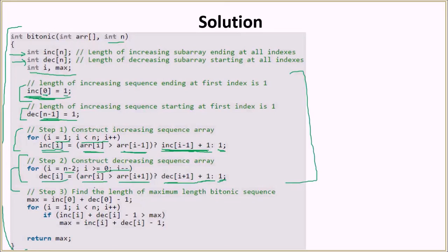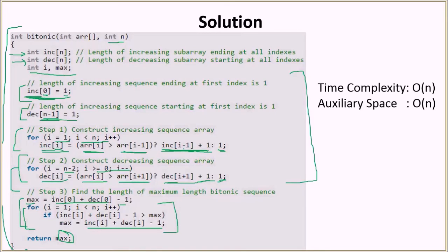After building both arrays, we calculate the maximum value. We initialize max with INC[0] + DEC[0] - 1, then run a loop computing INC[i] + DEC[i] - 1 for each index and keeping the maximum. Finally we return that maximum value. The time complexity is O(n) because we have three linear traversals of the array. The auxiliary space is also O(n) due to the two auxiliary arrays.